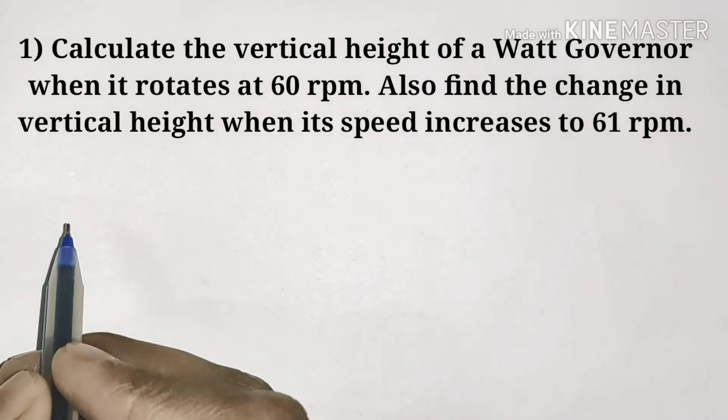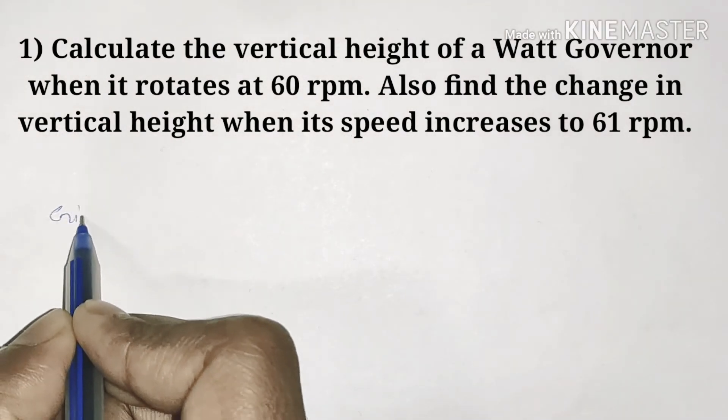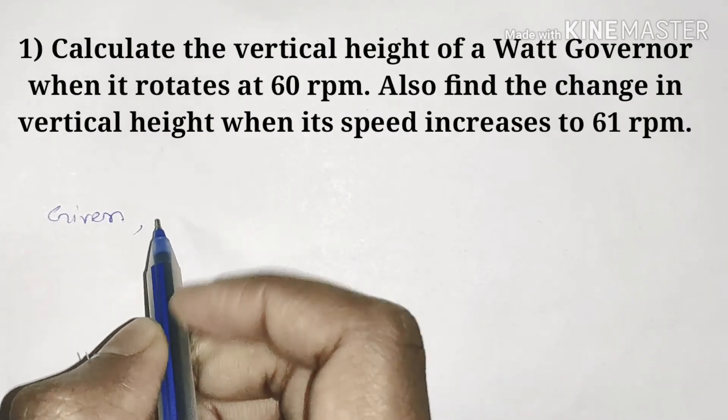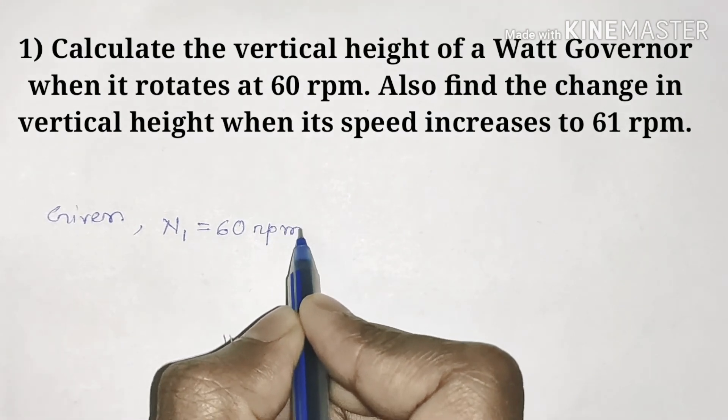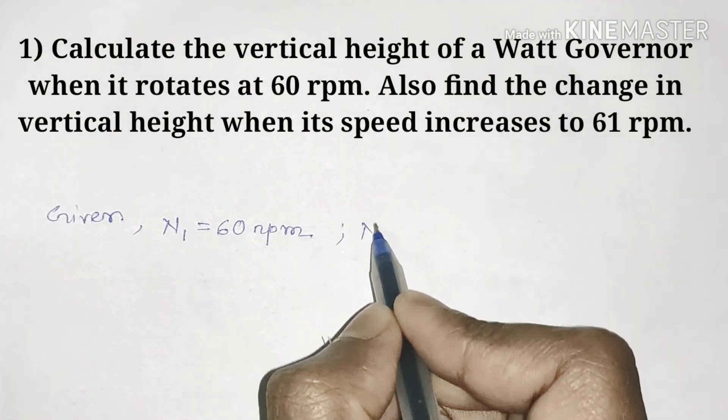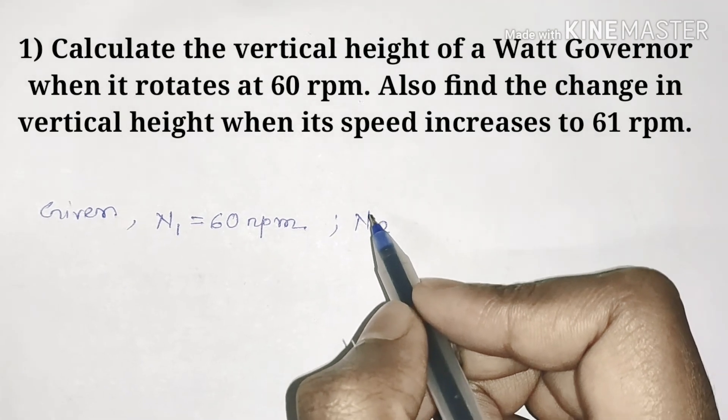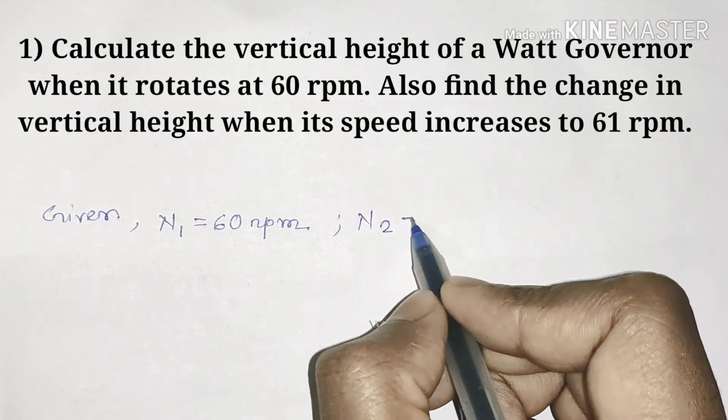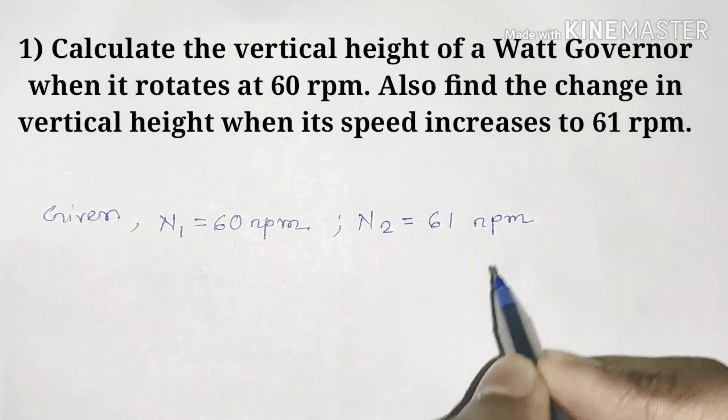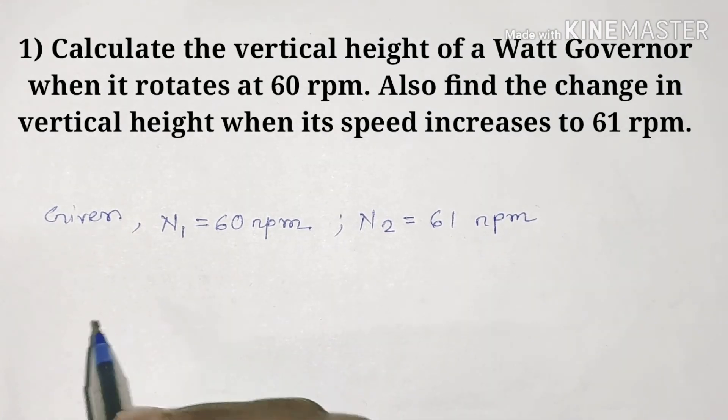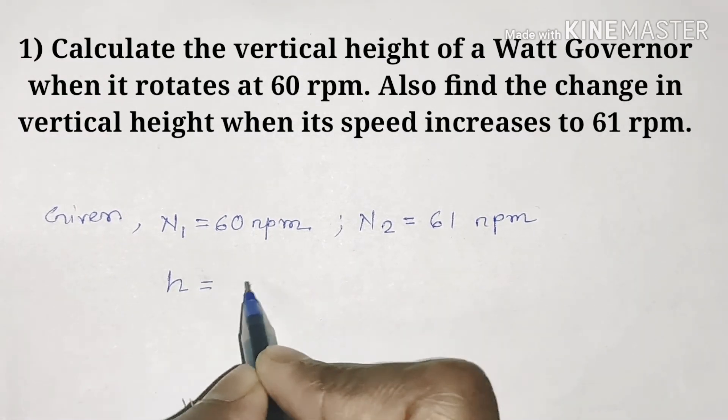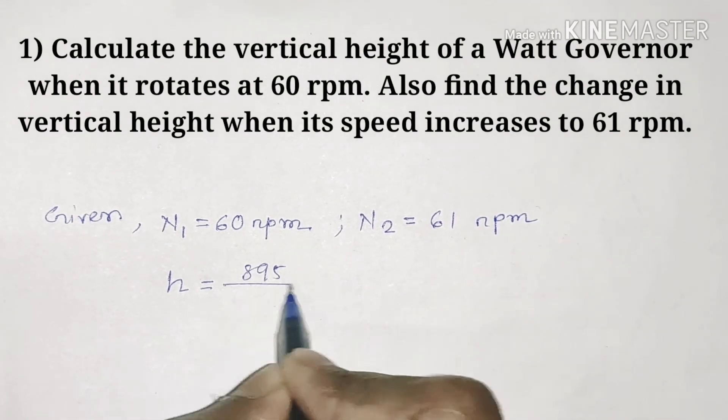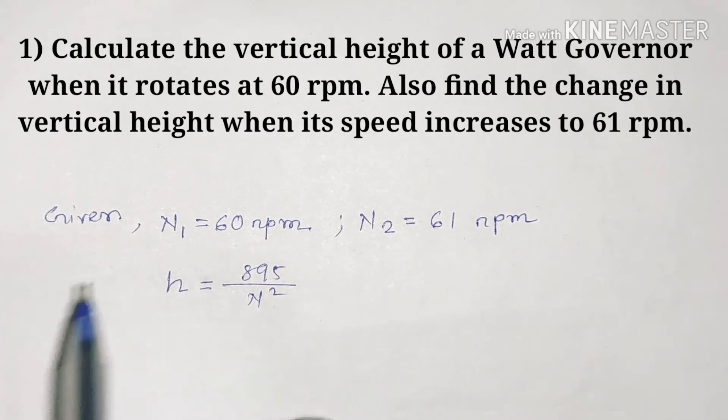What is given? We are given that N1 is 60 rpm and N2 is 61 rpm. Now we will find the initial height. If we know the formula, h is equal to 895 by n squared.